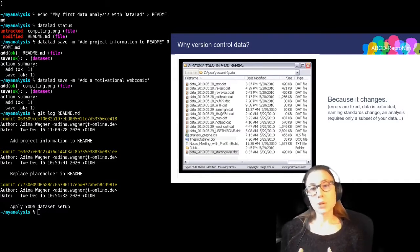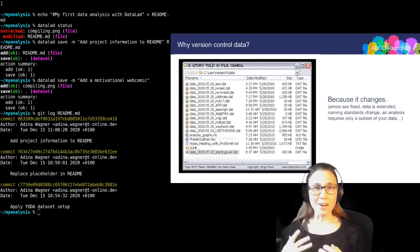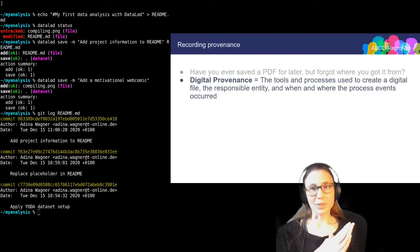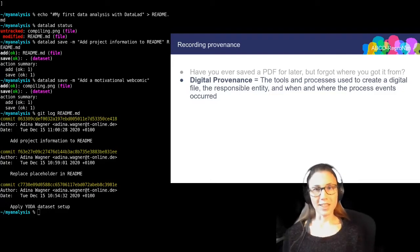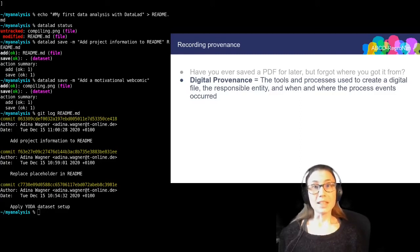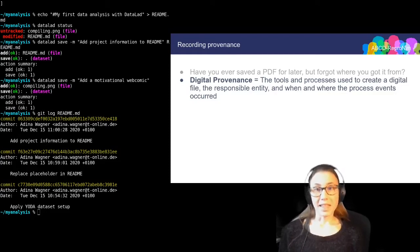Before I show you how to use DataLad for analysis and linking data and precise versions to code and results, there are a few more features I want to demonstrate. The first is a sneak peek into provenance capture. Dr. Mattone has already talked about digital provenance in week five. It's an important part of FAIR data management. Now, in a dataset you're already capturing some provenance — for example, who made a change and when. But there's a command that captures the origin of a file, namely datalad download-url.